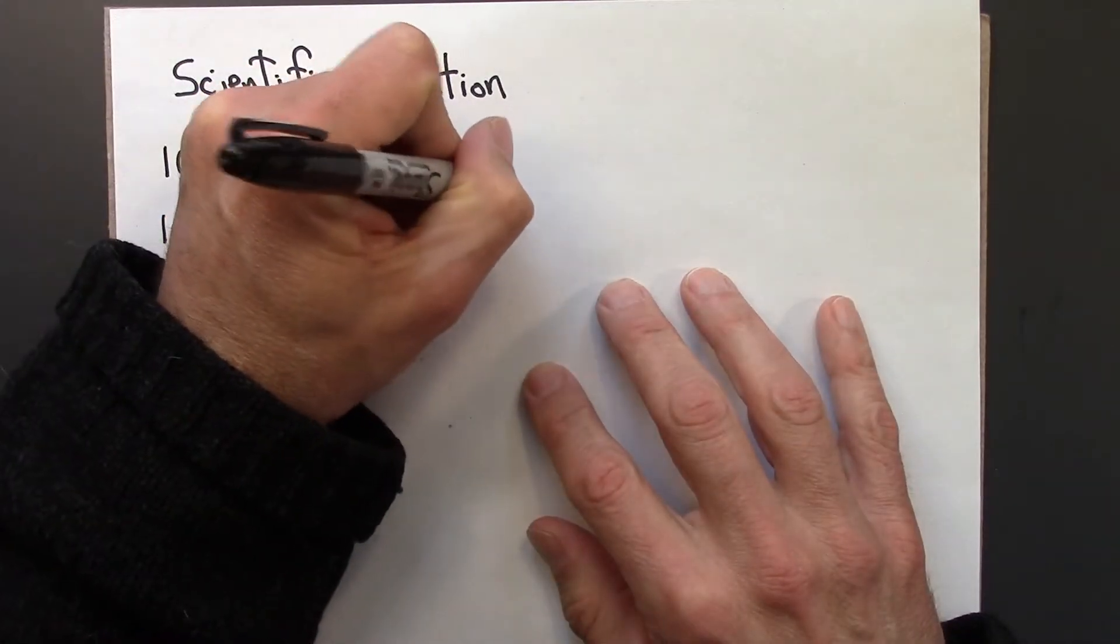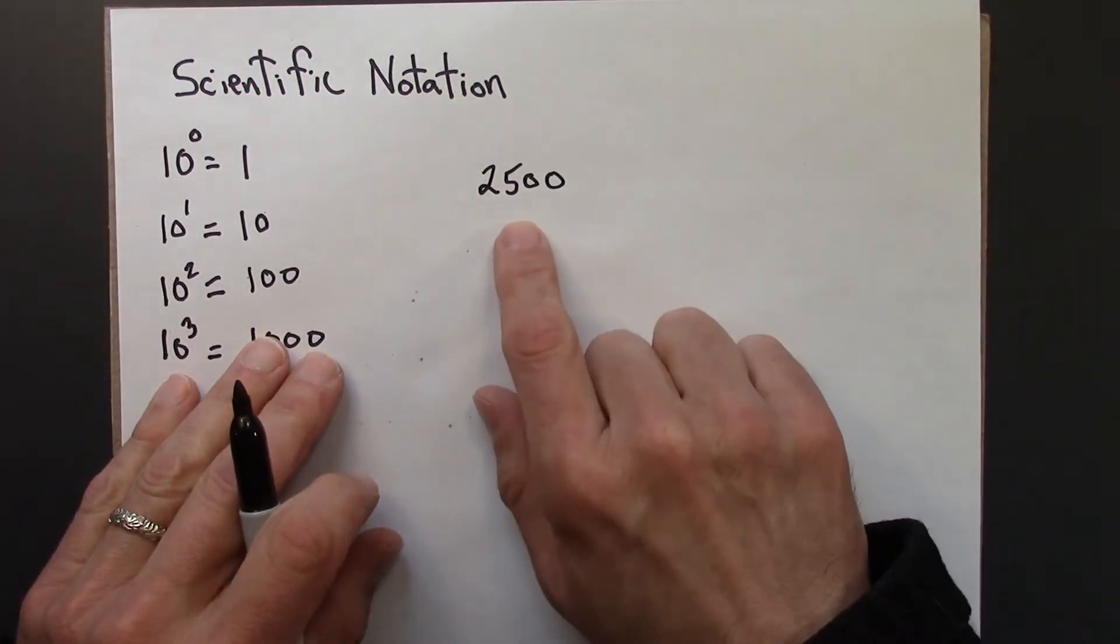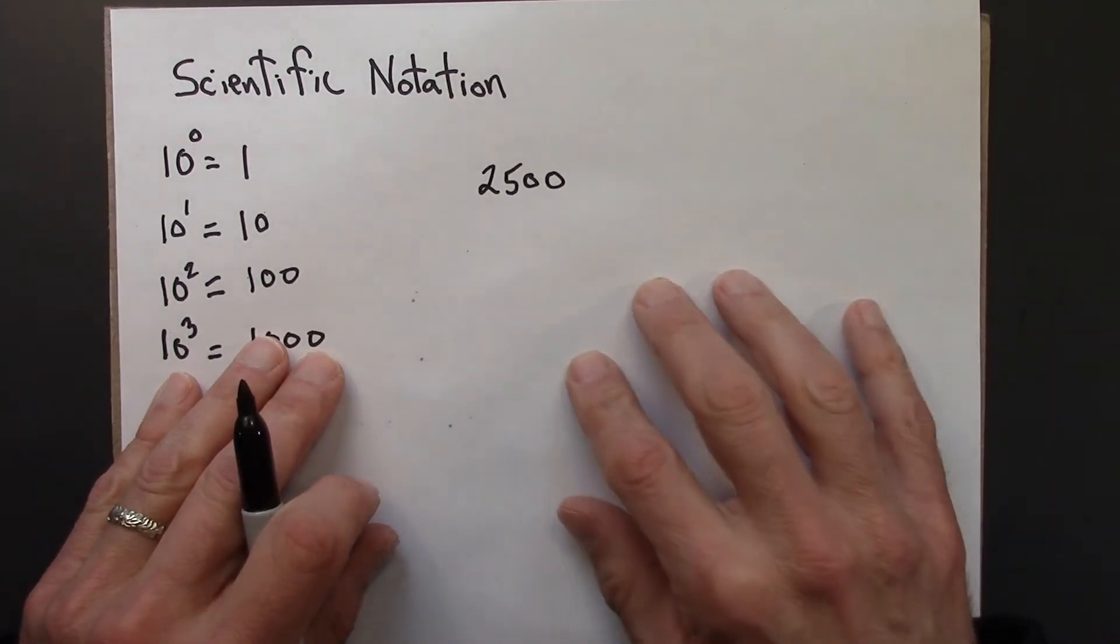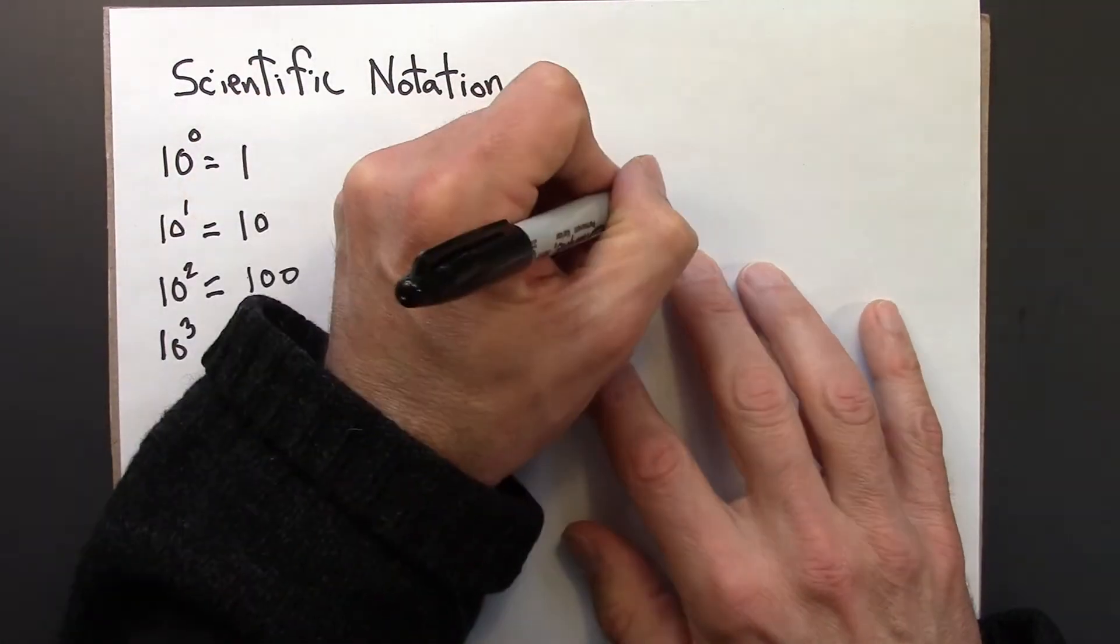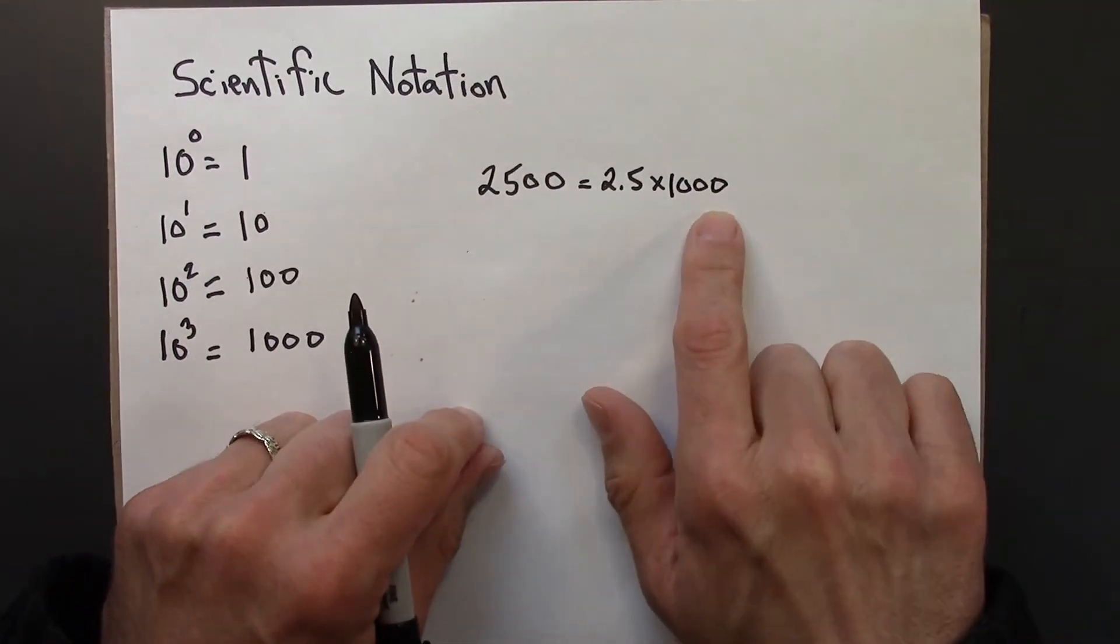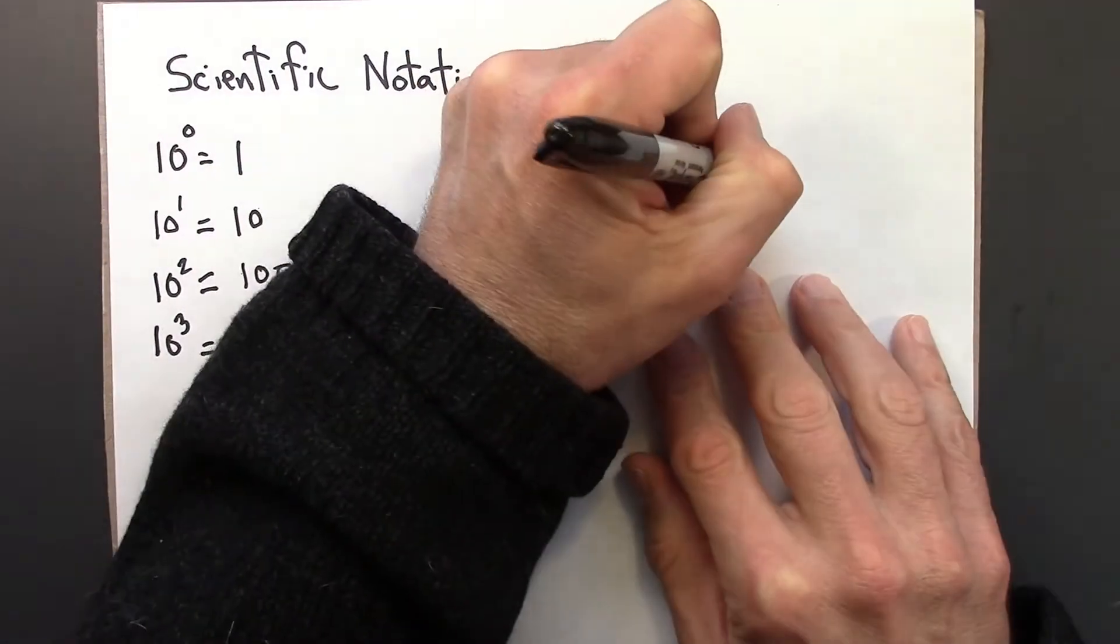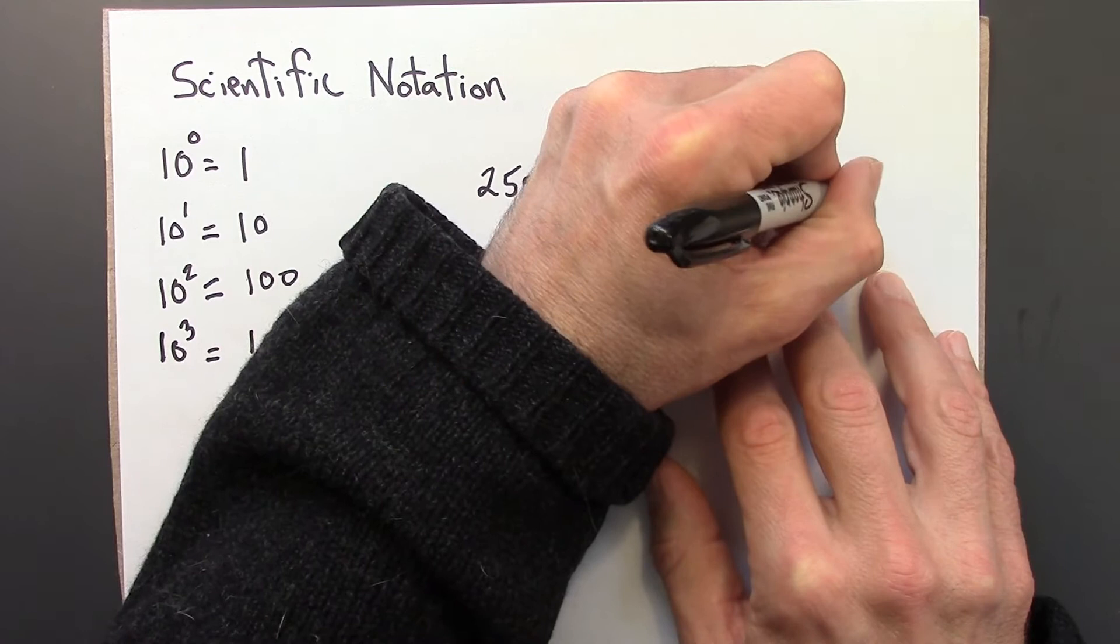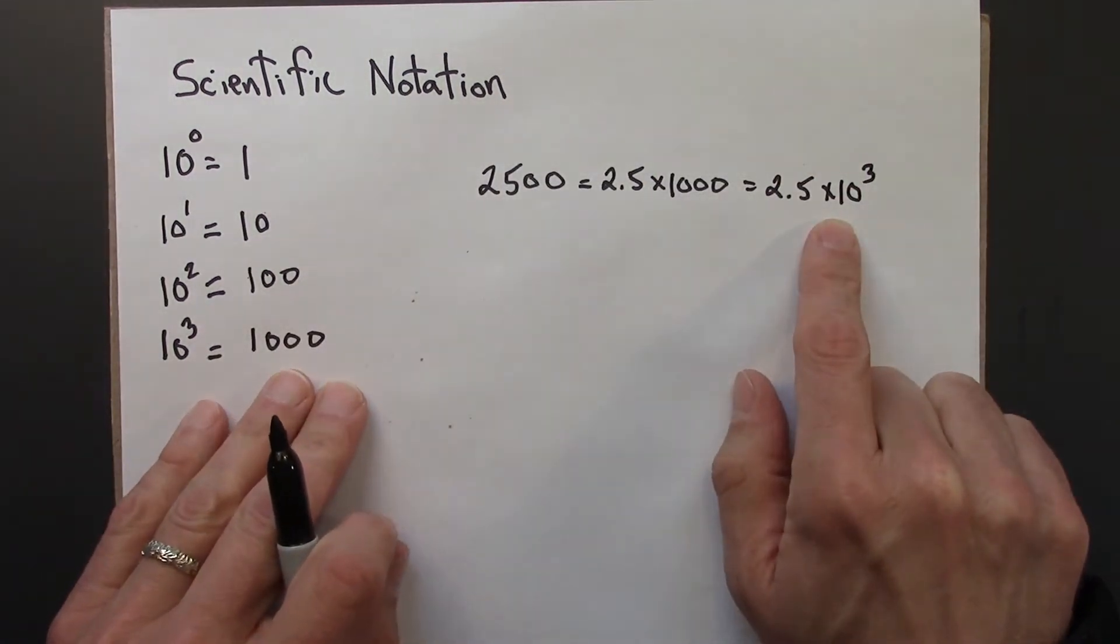So let's say we have 2,500. And granted, that's not a difficult number to work with. But suppose we wanted to turn that into scientific notation. Well, 2,500 is the same as 2.5 times 1,000. And 1,000 is 10 to the 3. So I could write this like this.